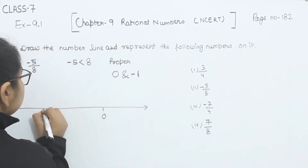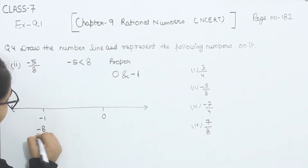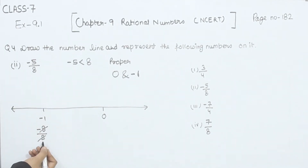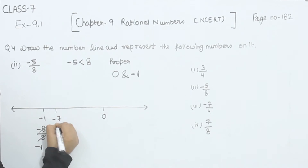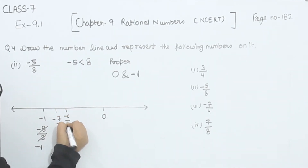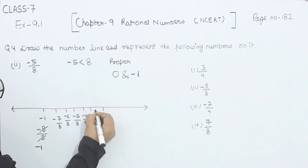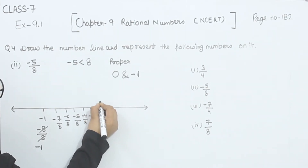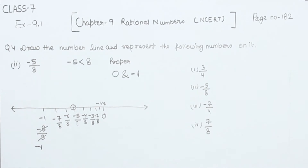So this is 0 and this is minus 1. At the place of minus 1, I can write it as minus 8 by 8. Dividing the interval into 8 parts: minus 7 by 8, minus 6 by 8, minus 5 by 8, minus 4 by 8, minus 3 by 8, minus 2 by 8, and minus 1 by 8. So this is the minus 5 by 8 on the number line. We have represented minus 5 by 8. Now comes part 3.